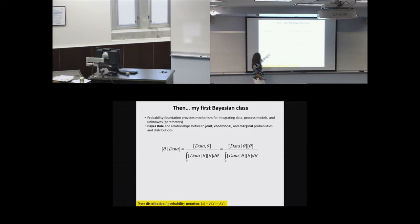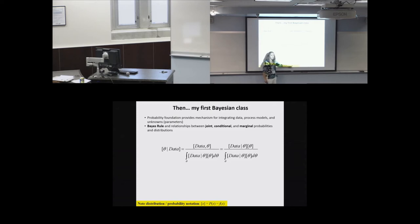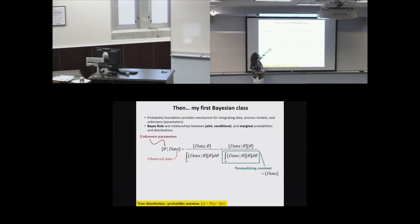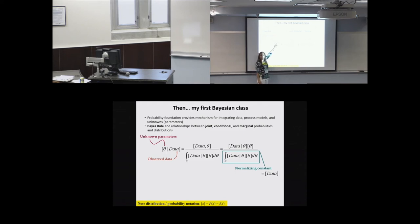Here's an example of Bayes' rule applied to a simple Bayesian data analysis, using bracket notation as shorthand. The goal is the probability distribution for your unknown parameters — regression coefficients, variance terms, treatment effects — conditional on your data. It's not conditional on things you could have observed but didn't, which is the classical frequentist interpretation. The right-hand side is the joint distribution of data and unknown parameters divided by the marginal distribution of your data.